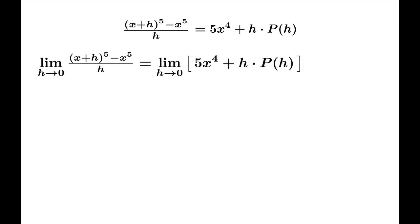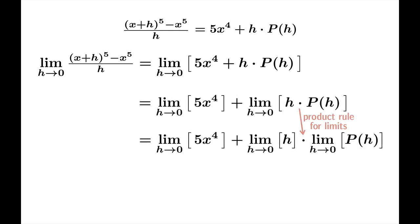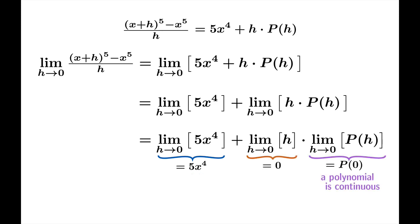And now we need to take the limit of this secant slope as h approaches zero. We can use the sum rule for limits and the product rule for limits to get this expression. This first term is just a constant. Remember, x is fixed throughout this process of looking at the limit as h goes to zero. This limit is of course zero. And because a polynomial is continuous, this limit is simply p of zero. Now you could ask the question, well, what is p of zero? And in fact, if you looked at the previous slide, you'd find out that p of zero is actually 10x cubed. But it's really irrelevant because this expression will wind up being zero times p of zero. So the value of p of zero really doesn't matter. You know that this term is going to wind up being zero, and the total limit is 5x to the fourth.